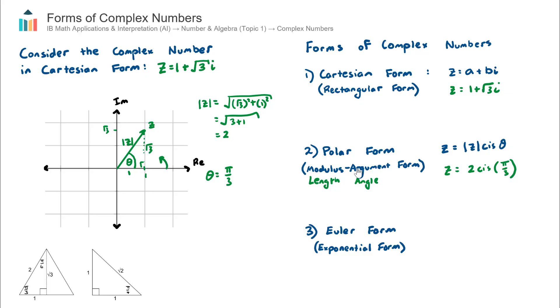Now that we have found the modulus and the argument, converting to Euler form is actually very quick to go from polar form to Euler form. The form of a complex number in Euler form is equal to the modulus, again, multiplied by E to the power of i multiplied by the argument. We have the information that we need here, the modulus and the argument. We already have it for our example. So to write this out, it's actually fairly quick. I can just substitute those values straight in. So it'll be 2e to the i multiplied by pi on 3.